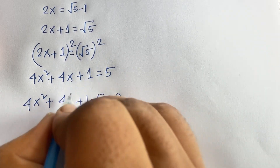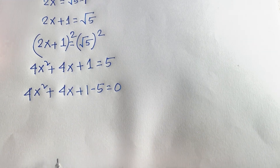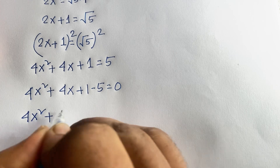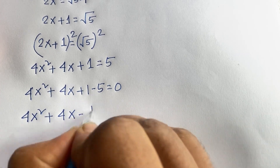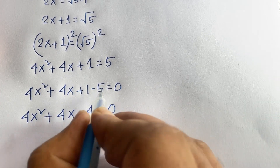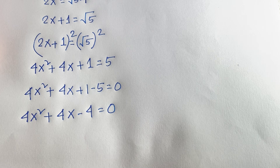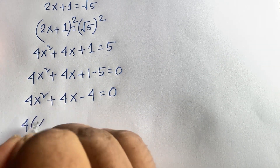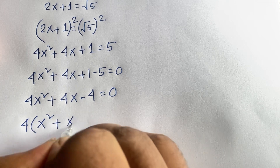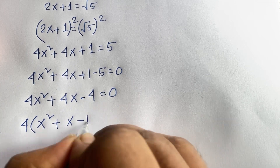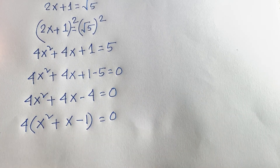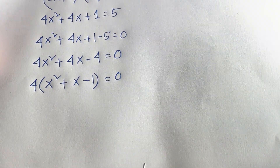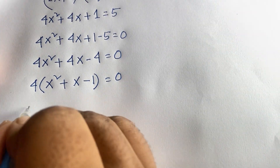Moving 5 to this side it becomes negative 5, so 4x² + 4x + 1 minus 5 is equal to 0. That gives us 4x² + 4x minus 4 is equal to 0, since 1 minus 5 is minus 4. Then I can see that 4 is common, so it will be x² + x minus 1 is equal to 0.